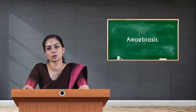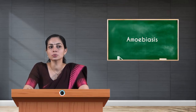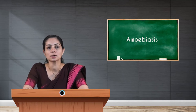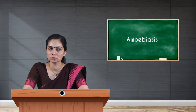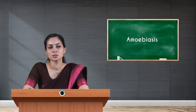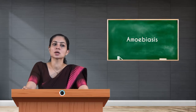In the life cycle, man is the only host for the parasite. The parasite enters the human body mainly through the feco-oral route via contaminated food and water. Rarely, it can enter through anogenital or orogenital contact in homosexual individuals, or via flies contaminating food. The infective form is the mature quadrinucleate cyst.